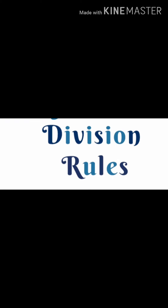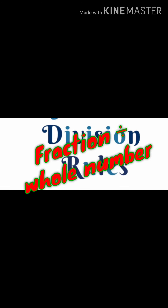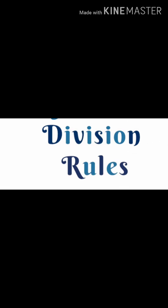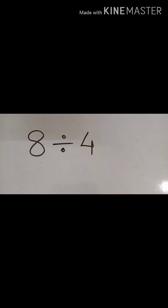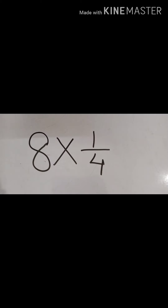Let us have a quick recap of what we have learned from division of whole numbers. Whenever we divide two whole numbers — for example, 8 divided by 4 — this is the same as 8/4, which is the same as 8 multiplied by 1/4. So a number being divided by a certain number is the same as that number being multiplied by the reciprocal of the divisor.